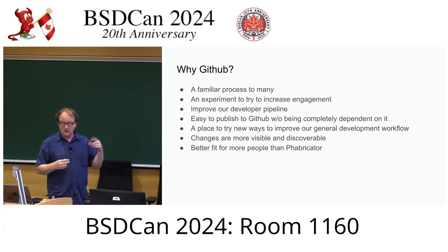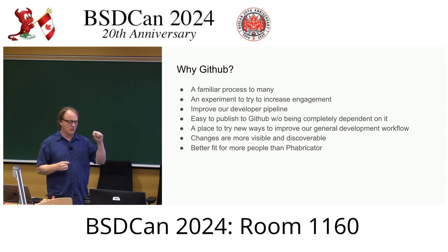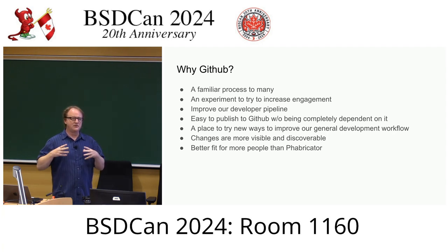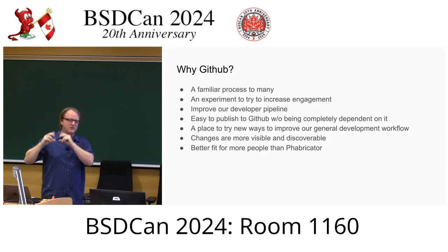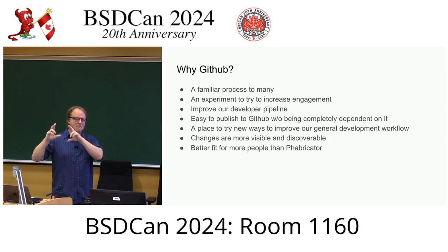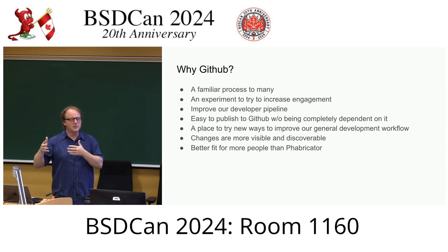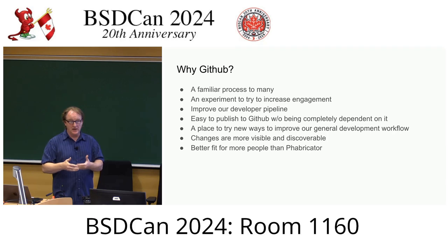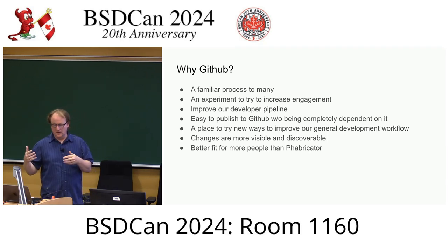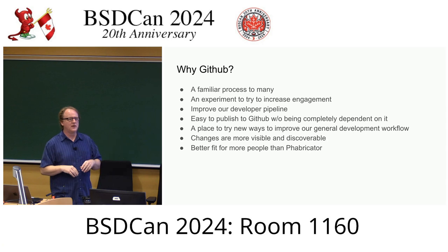I also chose GitHub over Fabricator for this experiment because changes are more discoverable. It's easy to go to GitHub and look at changes. Even when there are 100 or 200 pull requests open, GitHub allows me to make queries and filter down to a manageable number, whereas Fabricator doesn't.